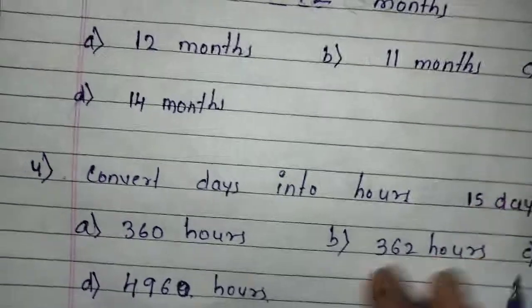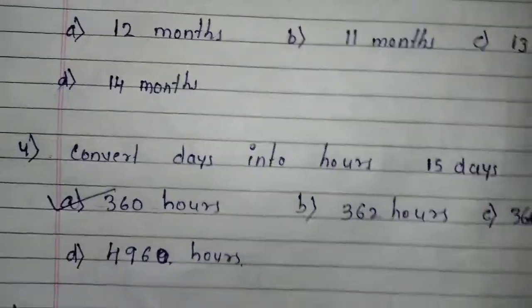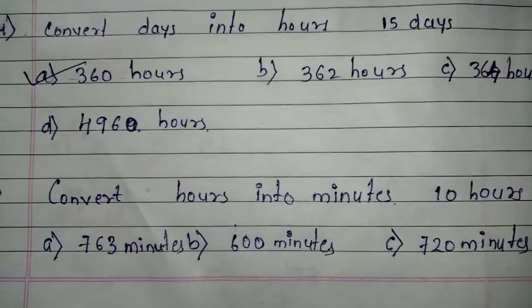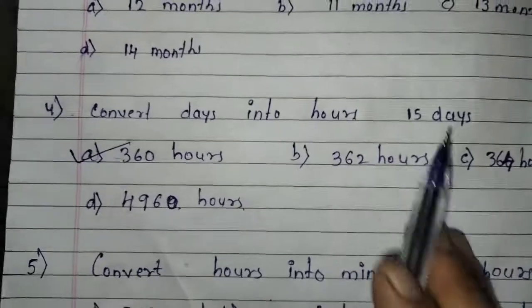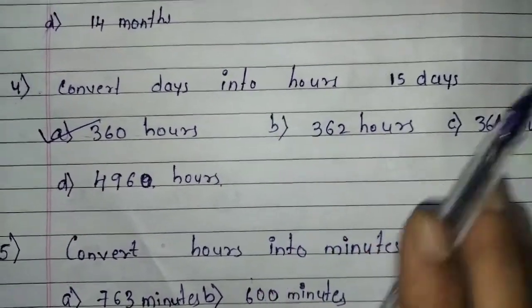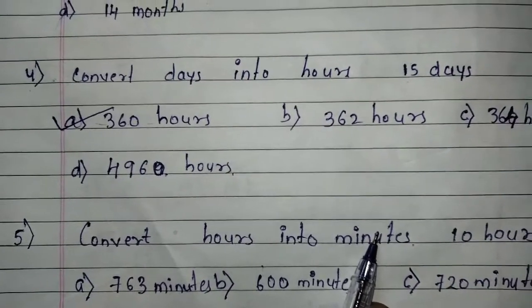Here you can see the answer is 360 hours, and you can tick it, children. Now the next question is: convert hours into minutes. This time you converted days into hours. Now this question, you have to convert hours into minutes.